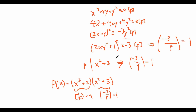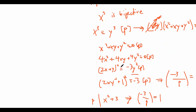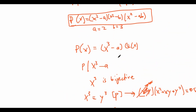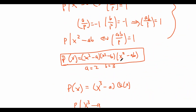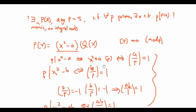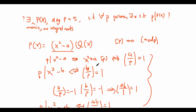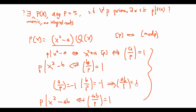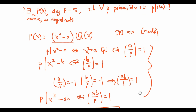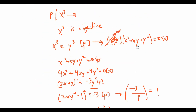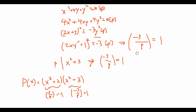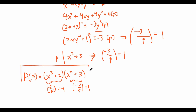This polynomial is degree 5, has no linear factors, and for every prime p there exists an x such that p divides p(x). This satisfies all the conditions we wanted, so this is our polynomial and we are done.